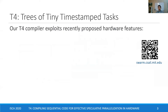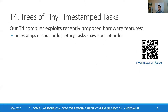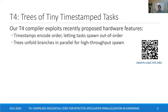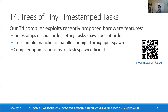We introduce T4, an open-source compiler that exploits recently proposed hardware features to achieve effective speculative parallelization. T4 breaks sequential code into trees of tiny timestamp tasks. T4 assigns each task a timestamp to encode sequential program order. Hardware enforces the timestamp order while allowing tasks to be spawned and run out of order. Each task may spawn multiple children out of order, forming a tree of tasks whose branches unfold in parallel for high-throughput task spawn. T4 introduces novel compiler optimizations to make these parallel task spawns highly efficient.